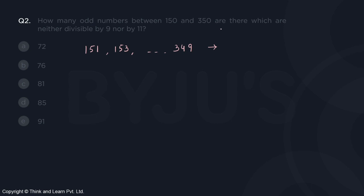Tn equals a plus n minus 1 times d. Here Tn equals 349, a is 151, that is the first term, plus n minus 1 into d, the common difference which equals 2.